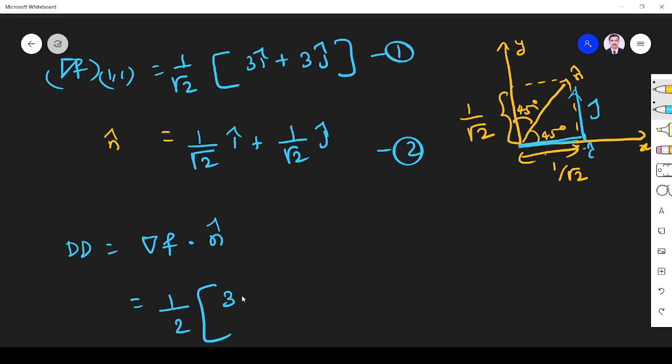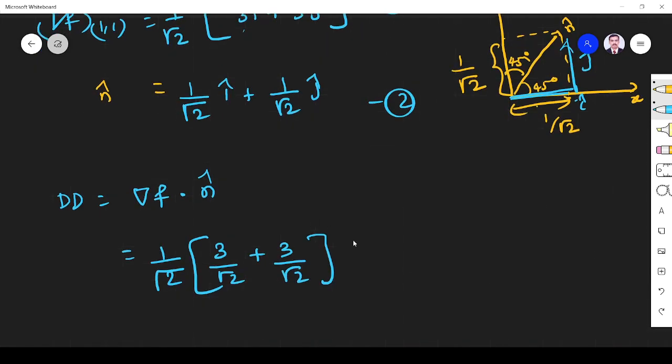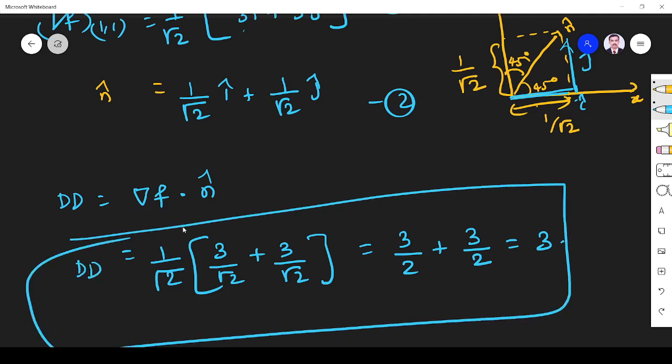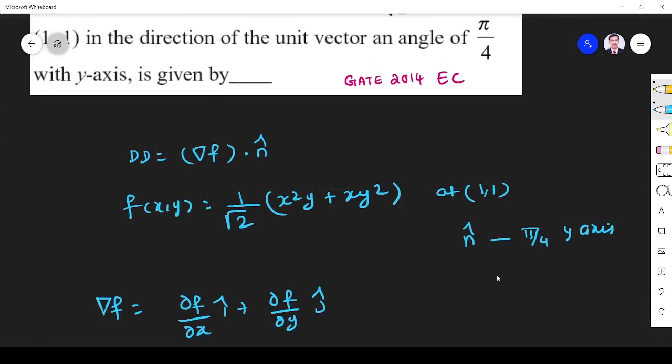This is 3. î·î is 1, so 3/√2 is this one. Here it is 3. ĵ·ĵ is 1, so 3/√2. Right? So bringing √2 inside: 3/2 + 3/2. That equals 3. So the directional derivative is 3. The answer is 3. Thank you.